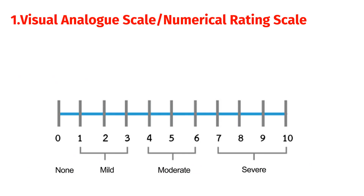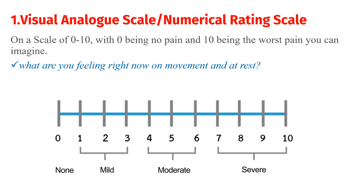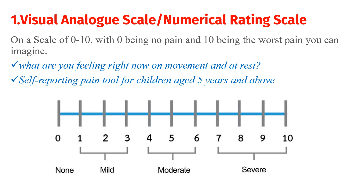The first tool is the Numerical Rating Scale. On a scale of 0 to 10, with 0 being no pain and 10 being the worst pain you can imagine, we ask what the child is feeling right now — on movement and at rest. This is a self-reporting pain tool for children aged 5 years and above. If a child says 2, the pain is mild; if 4, 5, or 6, it is moderate; if above 7, it is severe.